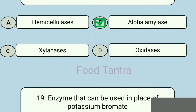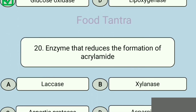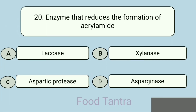Question 19: Enzyme that can be used in place of potassium bromide — Option A: Protease. Option B: Lipase. Option C: Glucose oxidase. Option D: Lipoxygenase. Answer: Glucose oxidase. Question 20: Enzyme that reduces the formation of acrylamide — Option A: Laccase. Option B: Xylanase. Option C: Aspartic protease. Option D: Asparaginase. Correct answer: Asparaginase.